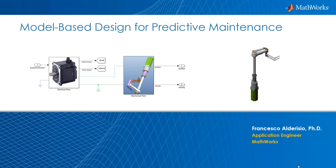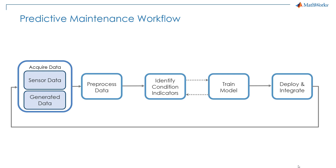The journey we're going to go on together starts with using a Simulink model as a digital twin to generate synthetic failure data. We'll then pre-process that data and extract what we call Condition Indicators — essentially features that describe and summarize the health condition of our system.